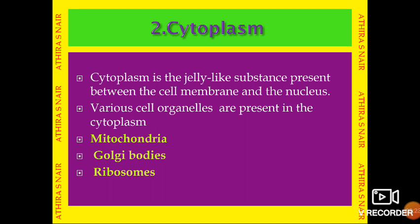Cytoplasm is the jelly-like substance present between the cell membrane and the nucleus. Various cell organelles are present in the cytoplasm, such as mitochondria, Golgi bodies, ribosomes, chloroplasts, etc.